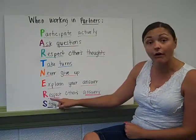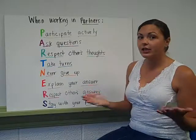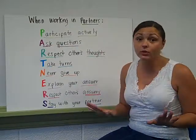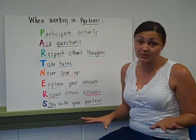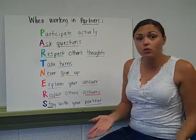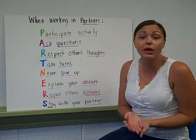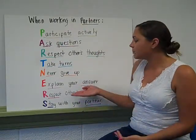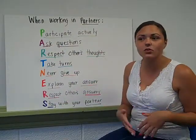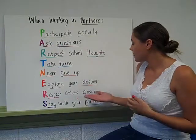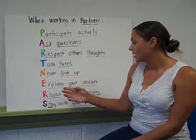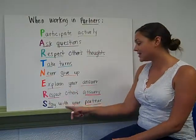The second R means respect others' answers. Say you and your partner come up with two different answers — no shouting at your partner because you think they're wrong. You need to respect their answer. They might be wrong and you might be right, or it could be the other way around. Respect their answer and wait to see who really is right. There's no reason to make another person feel bad about their answer.